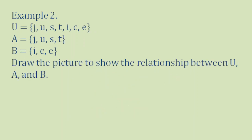Example number 2. The elements of set U are J, U, S, T, I, C, E. The elements of A are J, U, S, T, and the elements of B are I, C, E. Draw the picture to show the relationship between U, A, and B.